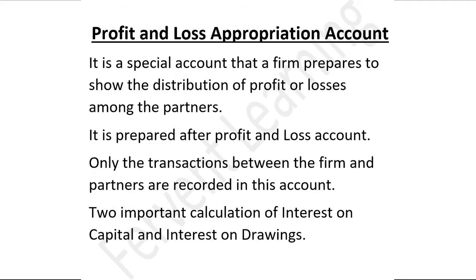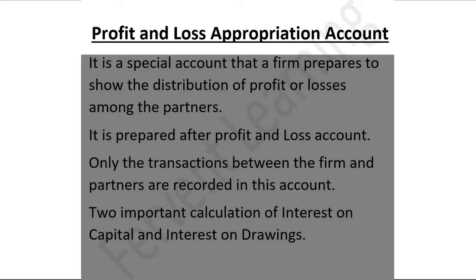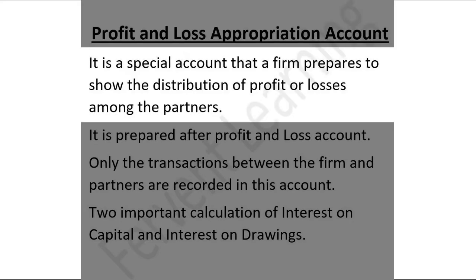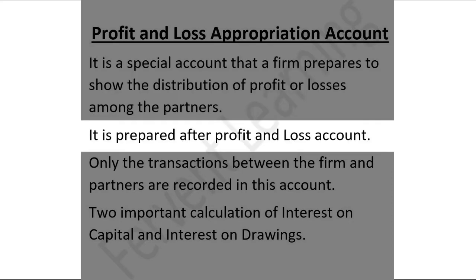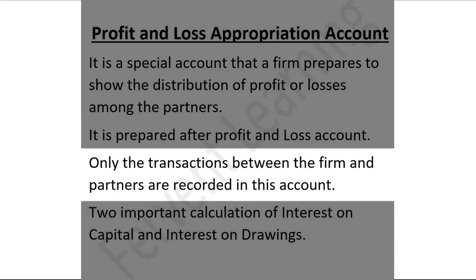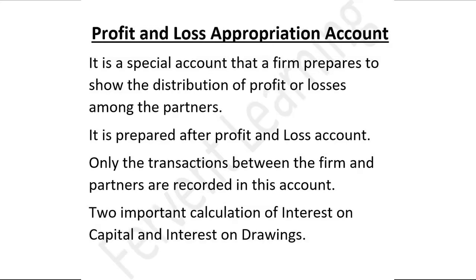Today we are going to start Profit and Loss Appropriation Account. Before that, it is very important to understand its meaning. It is a special account that the firm prepares to show the distribution of profit and loss among the partners. It is prepared after the Profit and Loss Account. Only the transactions between the firm and the partners are recorded in this account. Profit and Loss Appropriation is an account.